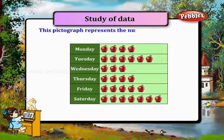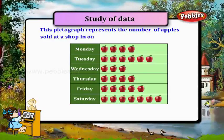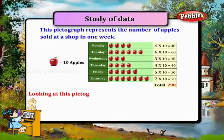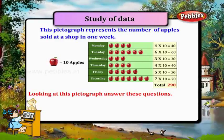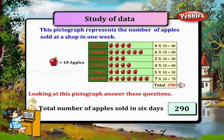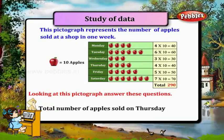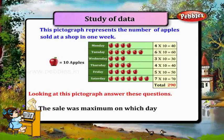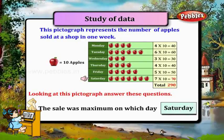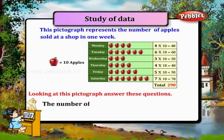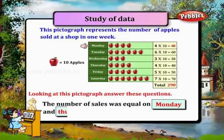This pictograph represents the number of apples sold at a shop in one week. One apple picture denotes 10 apples. Total number of apples sold in 6 days? 290. Total number of apples sold on Thursday? 40. The sale was maximum on which day? Saturday. The sale was minimum on Wednesday. The number of sales was equal on Monday and Thursday.